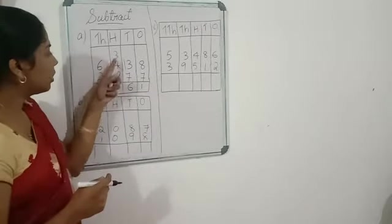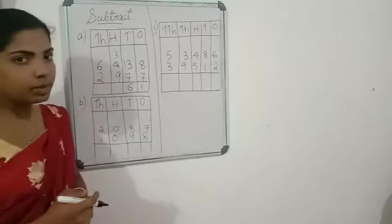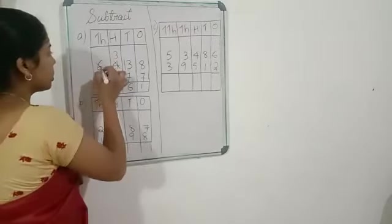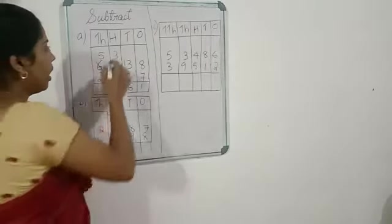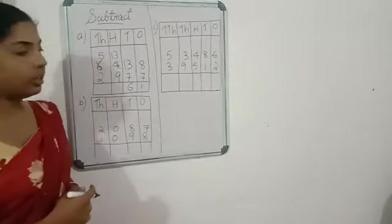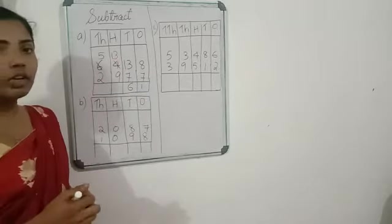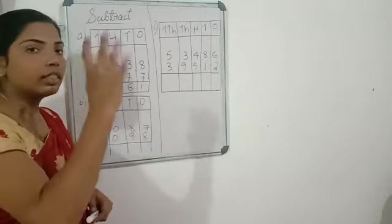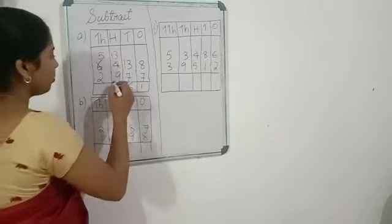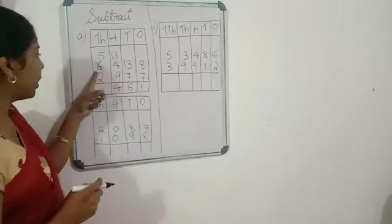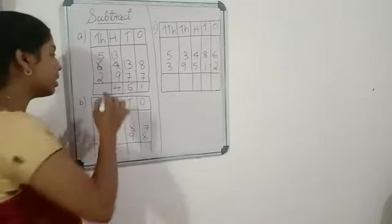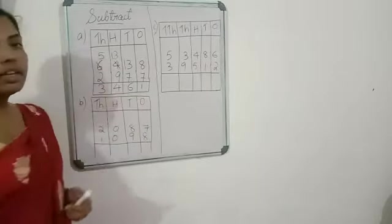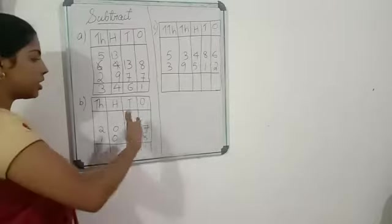Now six minus nine is not possible, so we borrow from the nearest place. The six becomes five and the three becomes thirteen. Thirteen minus nine: after nine, ten, eleven, twelve, thirteen — that is four. Finally, five minus two is three. The first answer is three thousand four hundred and sixty-one.